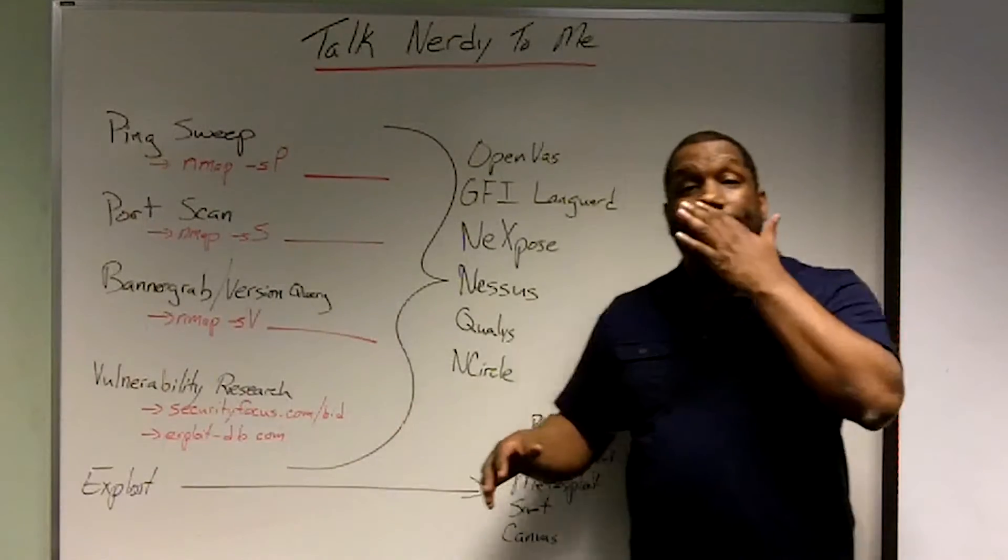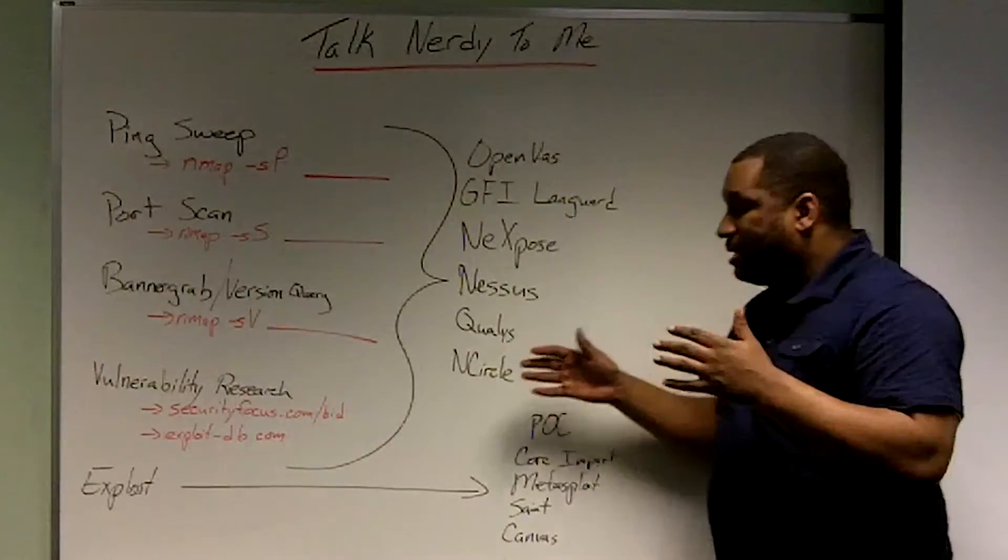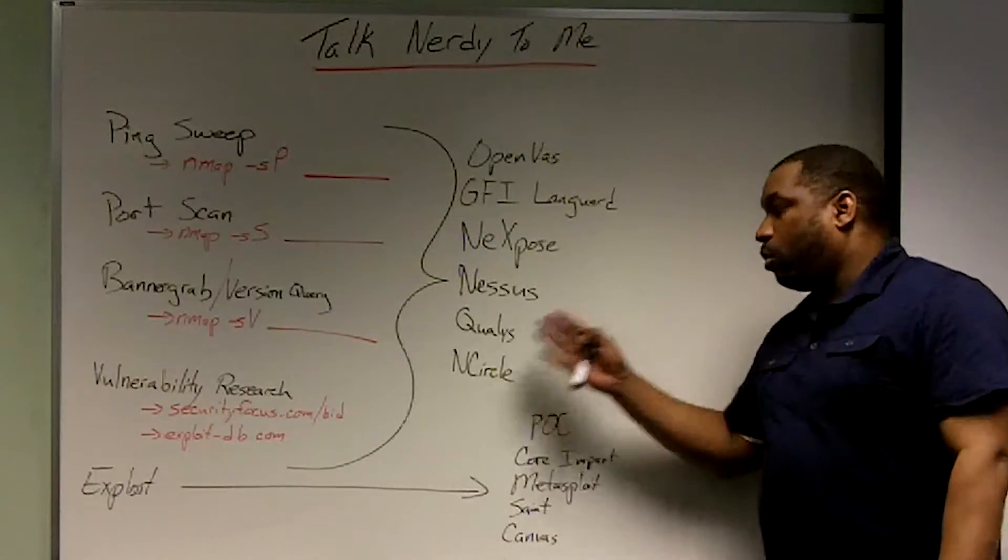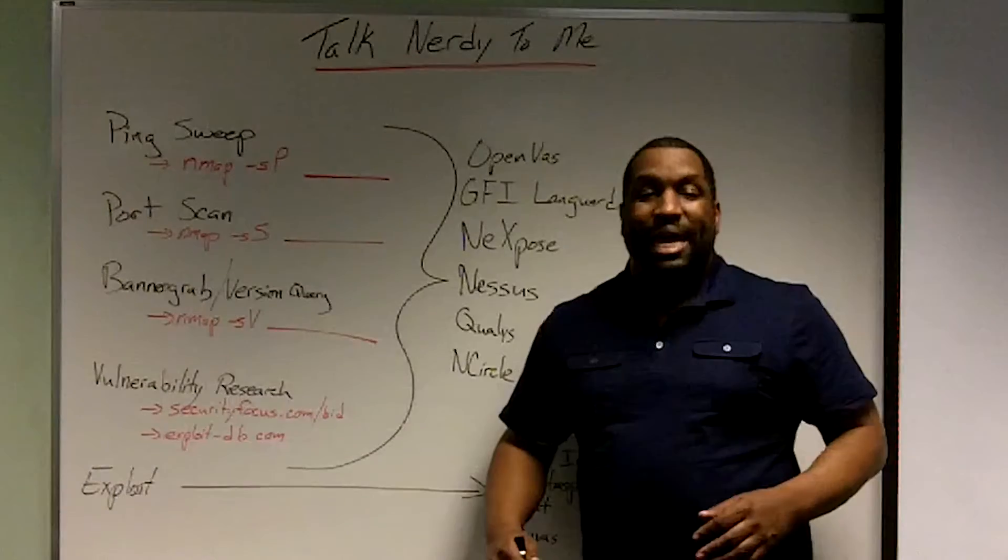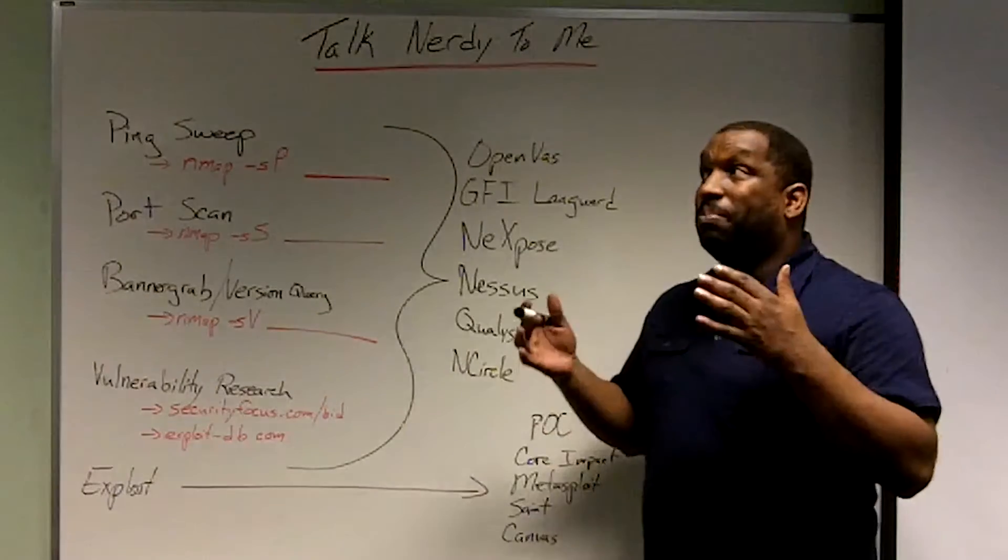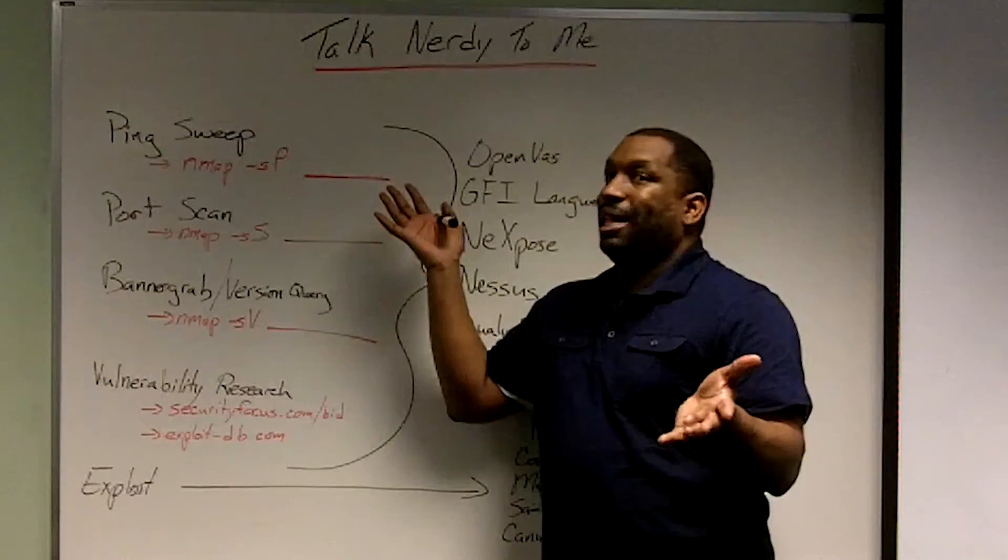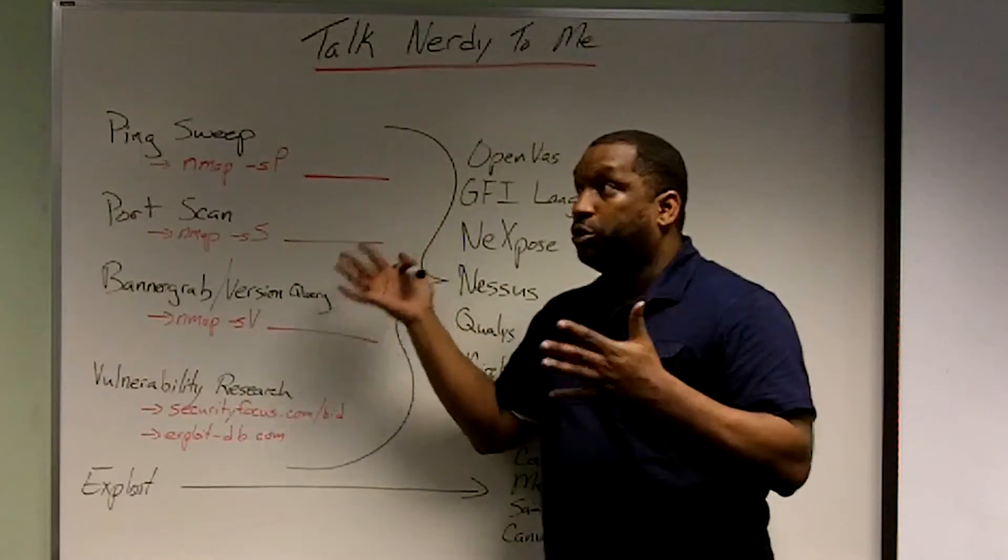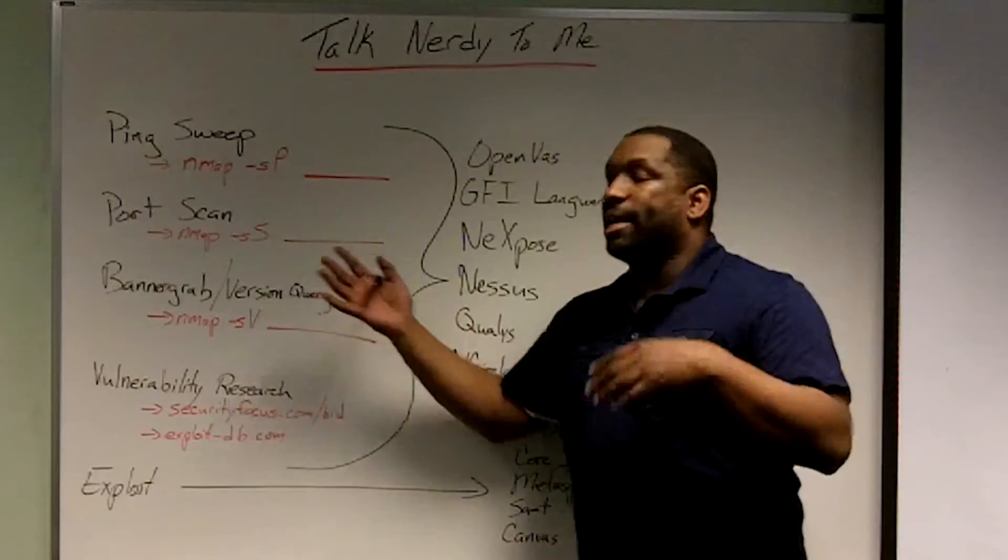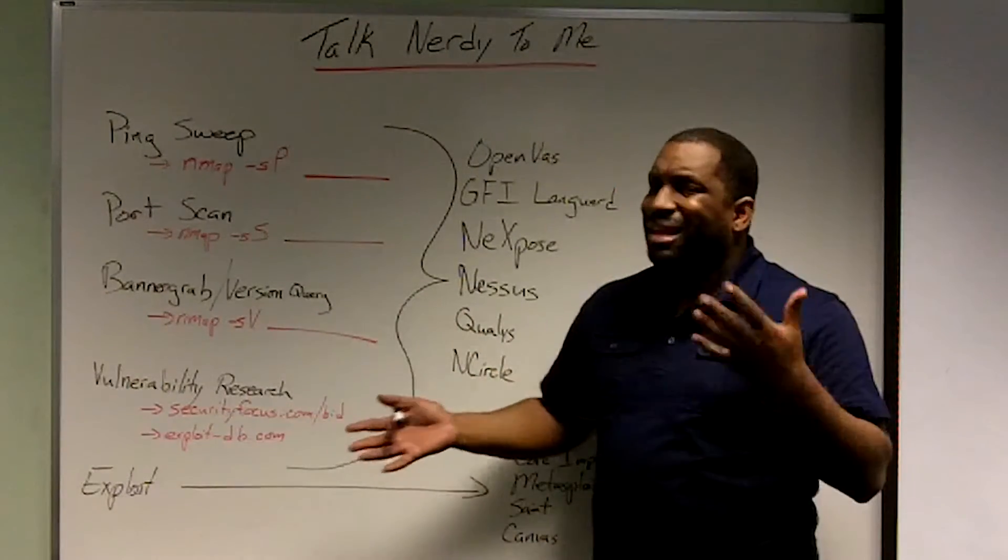When you buy a vulnerability scanner, your vulnerability scanner does that. A lot of people get into arguments about Nexpose being better than Nessus, or Qualys being the best vulnerability scanner on the planet. And don't get me wrong, there are some differentiators between the products, but for the most part, I don't think ping has really changed in the last 30 or so years. So I don't know that one scanner necessarily pings way better or port scans way better or looks up in the same database that we all use way better than one of the other scanners.